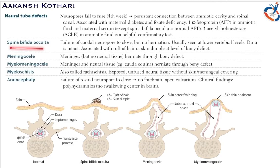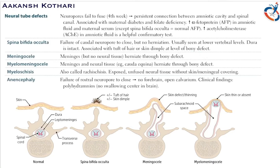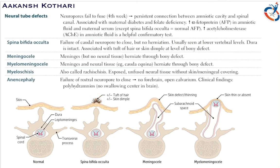In spina bifida occulta, the caudal — not the cranial or rostral — neuropore fails to fuse. It is usually seen at lower vertebral levels; the dura mater is intact and there are associated tufts of hair or a skin dimple at the level of the bony defect. Importantly, in spina bifida occulta there is no change in spinal cord structure — the dura mater is not herniated.